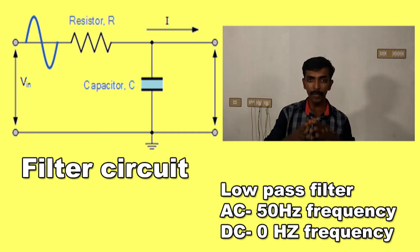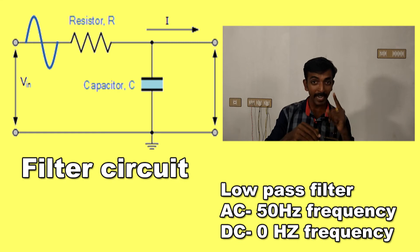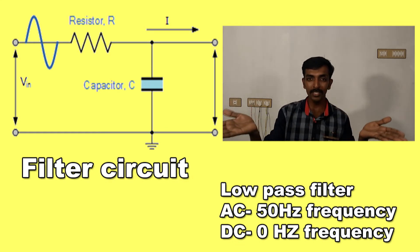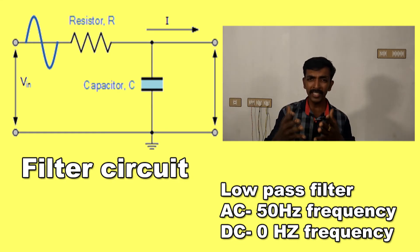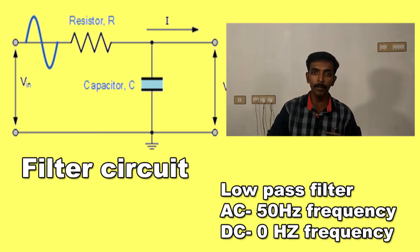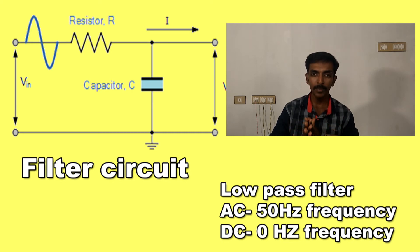When we talk about AC current, we say 230 volts at 50 Hz — it has a frequency of 50 Hz. In the case of DC current, the frequency is zero Hz. So the capacitor passes the DC current and bypasses the AC current to ground because it acts as a low-pass filter.